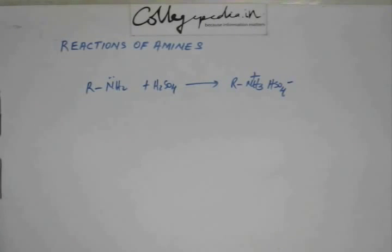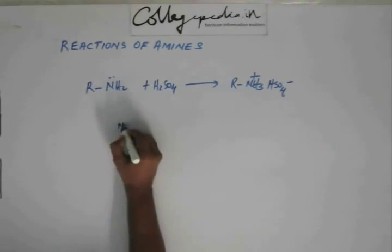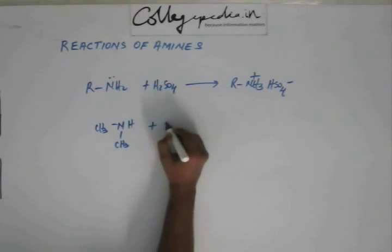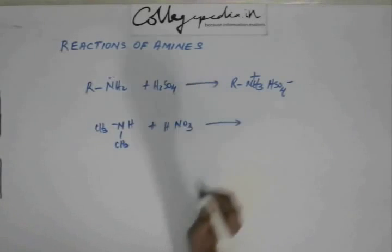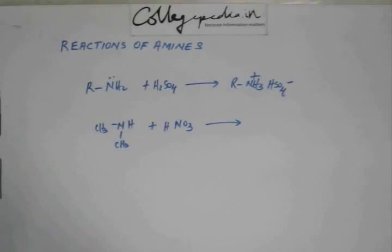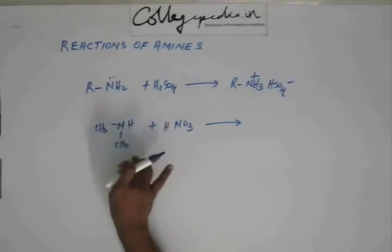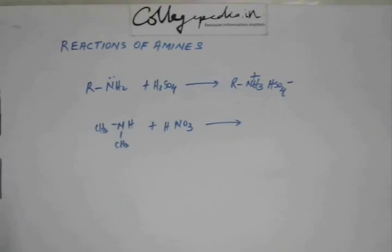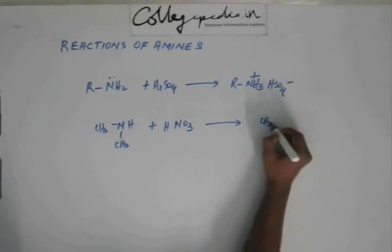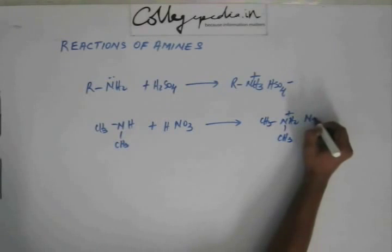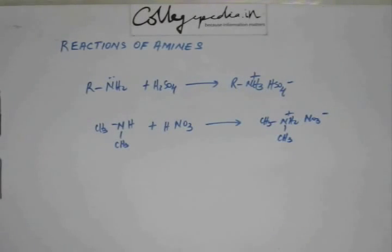This will be a simple acid-base reaction. Similarly, if we have dimethylamine and react it with dilute nitric acid — although nitric acid is an oxidizing agent, we are using a dilute form, and since this is a secondary amine it will not be oxidized easily — so this is a simple acid-base reaction. We are going to get dimethylammonium nitrate.